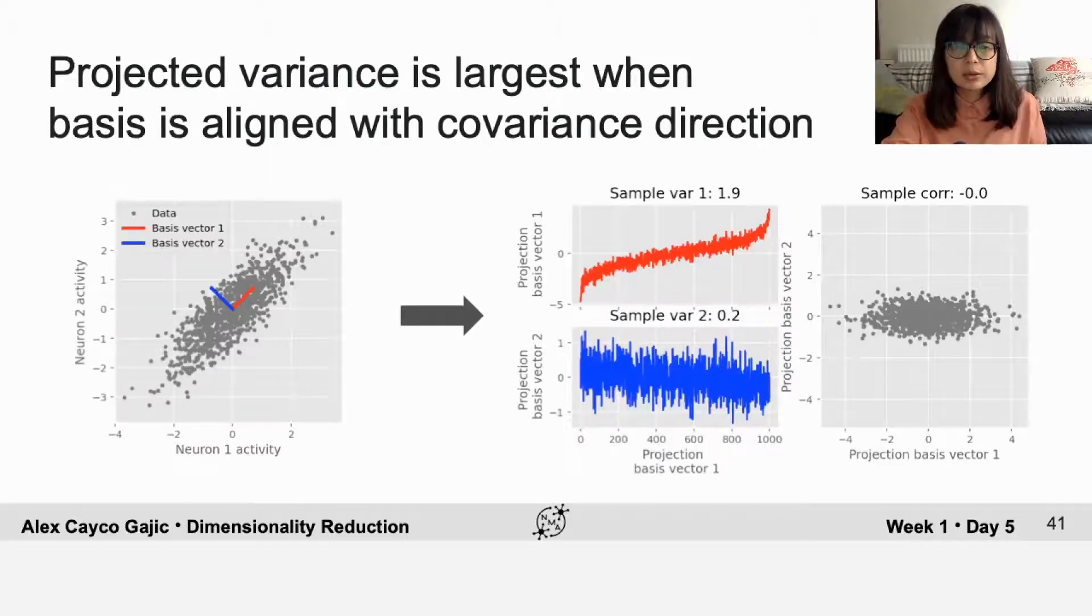We saw in the previous tutorial that the projected variance is largest when the basis is aligned with the covariance direction, and this also makes the correlation zero, but this is something we'll return to at the end of the lecture.